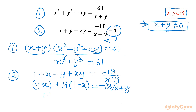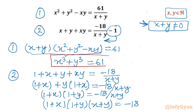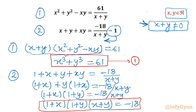Now 1 plus x is overall common, so the factorization gives 1 plus x times 1 plus y equal to minus 18 over x plus y. Multiplying both sides by x plus y, equation 2 becomes 1 plus x times 1 plus y times x plus y equal to negative 18. Our system is now converted into two simpler equations: equation 1 is x cubed plus y cubed equal to 61, and equation 2 is 1 plus x times 1 plus y times x plus y equal to negative 18.